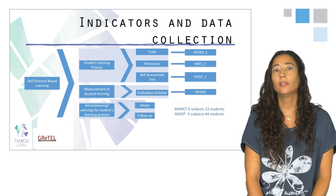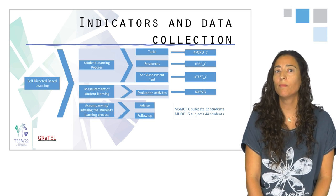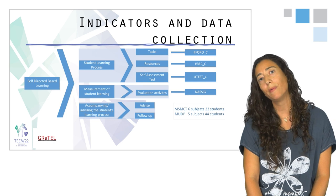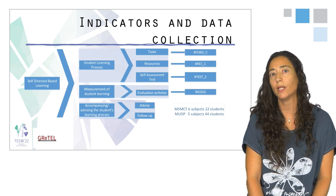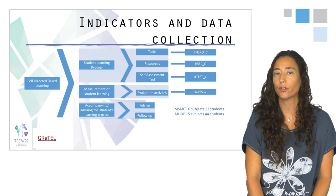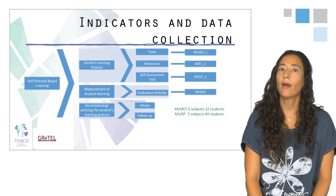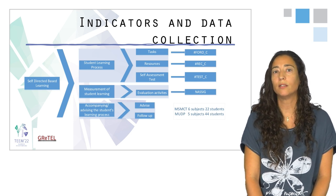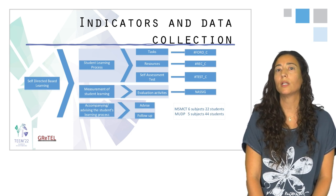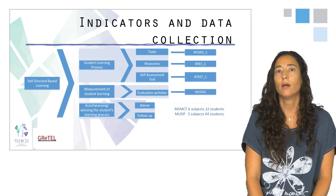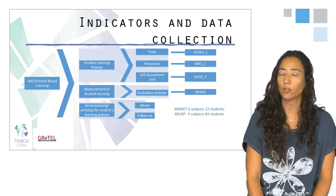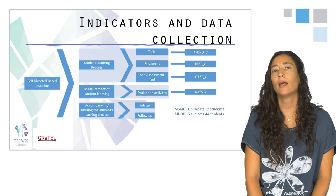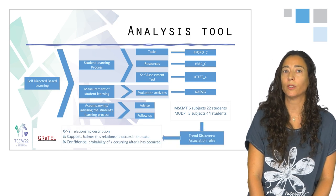Regarding academic success, we measure the simulation of the learning outcomes based on the evaluation activities grade ponderation. In summary, we have four indicators. We have collected these indicators in 11 courses from two programmes: Master in Supply Chain Management Technology and the Master in Project Management.